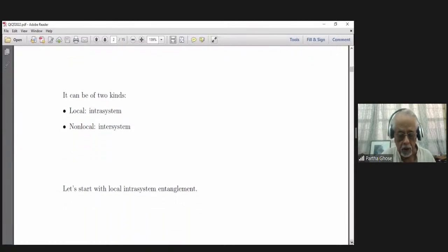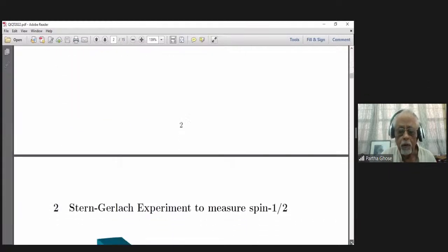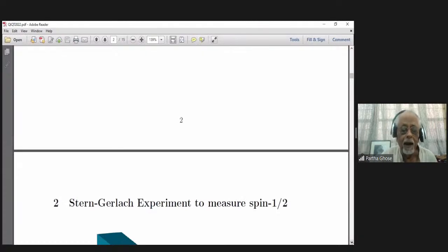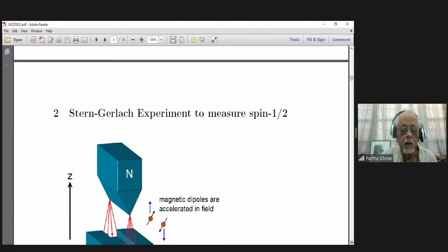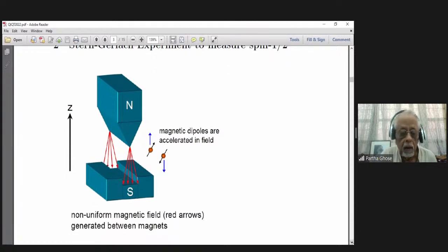Now, let's start with this local thing. We are all aware of the Stern-Gerlach experiment to measure spin half. You have an inhomogeneous magnet, and you send silver atoms through it. Now, silver atoms have spin half, so they will align themselves parallel or antiparallel to the field, and will emerge